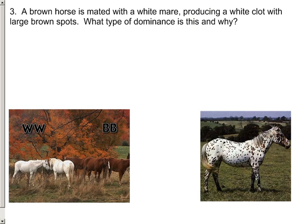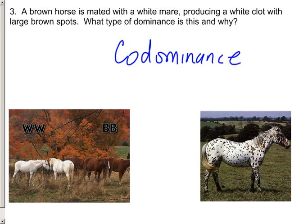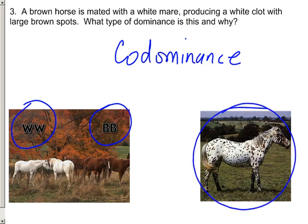The last example we have here is an example of co-dominance. In these pictures, you see a set of white horses being crossed with a set of brown horses. And rather than getting a tan horse like you might have gotten in that previous example, you get a horse that is brown and white spotted. Both of the alleles contribute to the phenotype — what this organism looks like. So we describe that as being co-dominant.